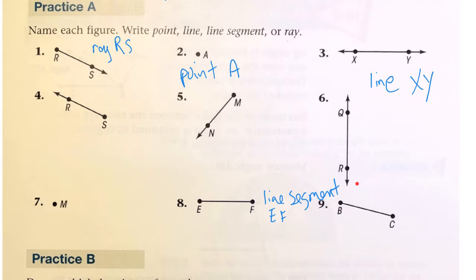This would be a line QR, point M, line segment EF, line segment BC.